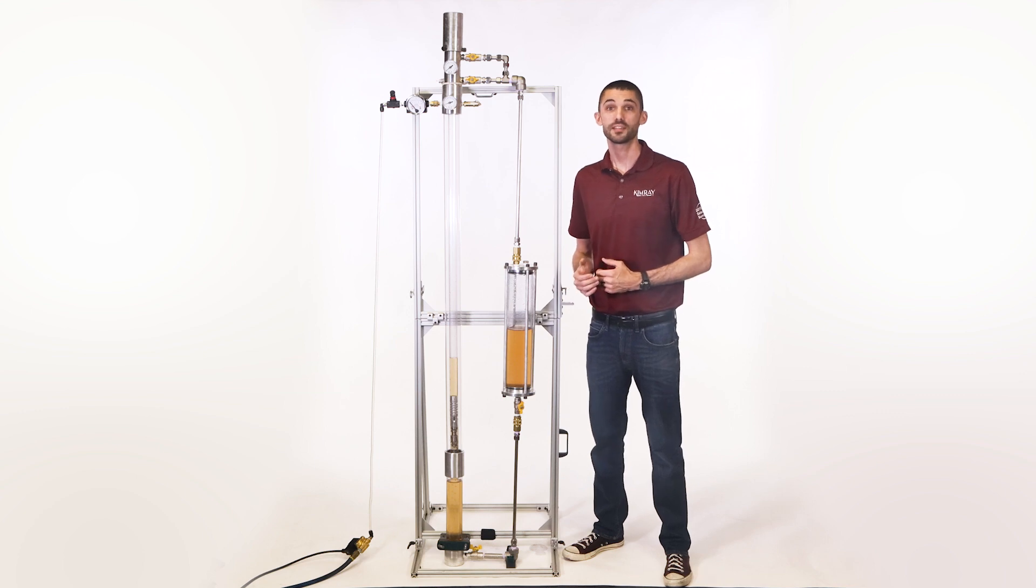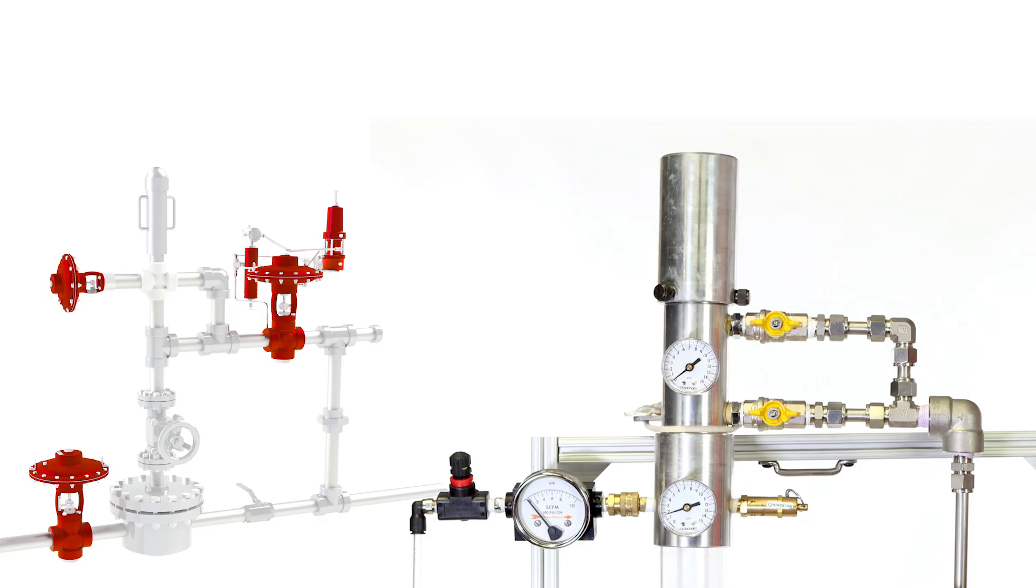This model is simulating gas-assisted plunger lift. First, let's identify what each piece on the model represents. Above the surface would be the Christmas tree, then you have your lubricator, and right here would be the control valve.